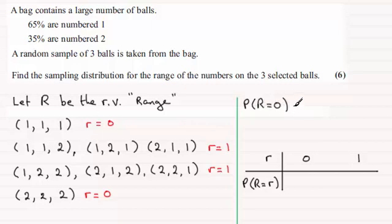That's going to be the case when we have all ones - that's 0.65 cubed - and then for all twos, that's plus 0.35 cubed. Work that out in your calculator and you get the value 0.3175.